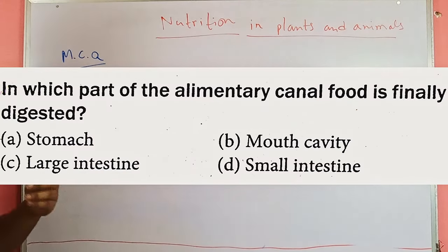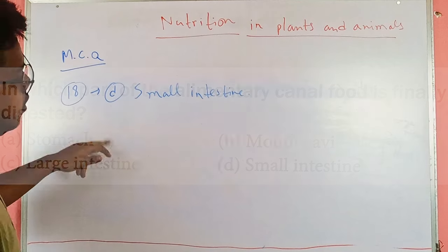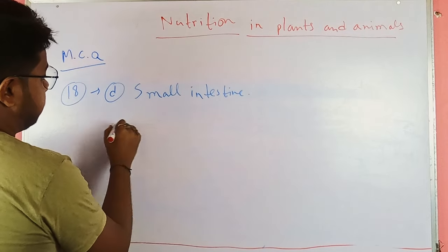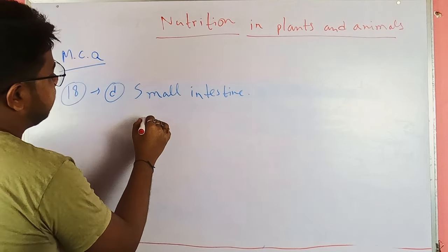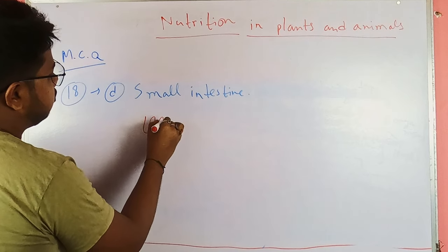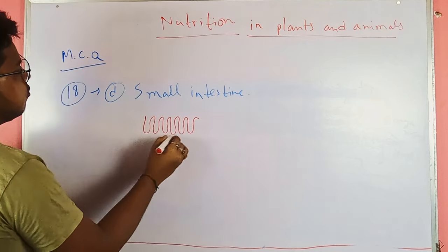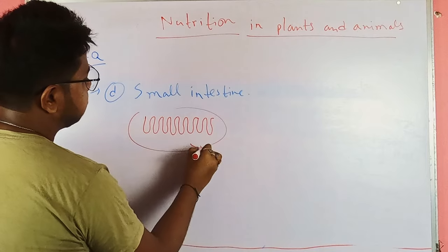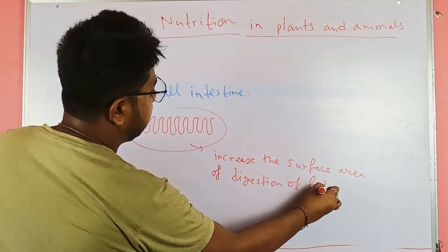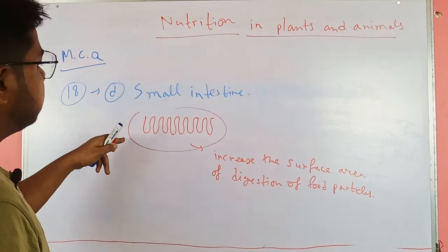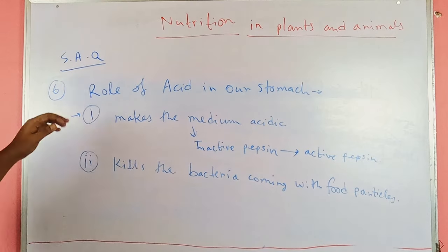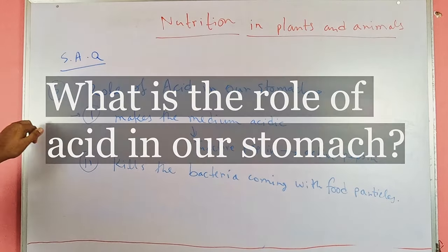The next question asks in which part of the alimentary canal food is finally digested. The correct answer is option D: the small intestine. Within the inner wall of the small intestine there are millions of small finger-like projections called villi, which increase the surface area for digestion. Within the small intestine, food is finally digested.